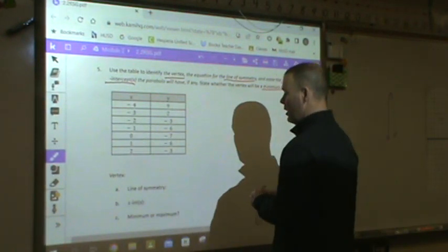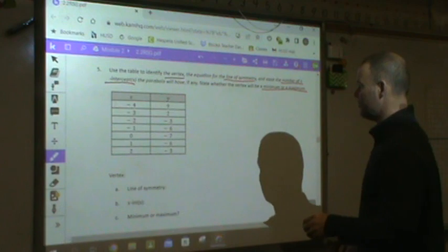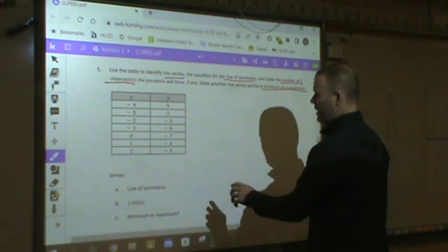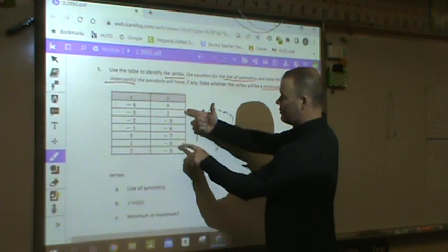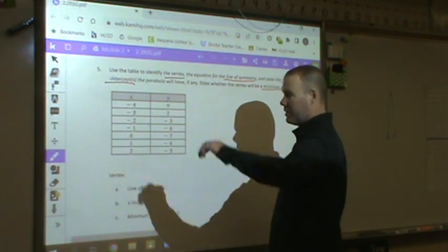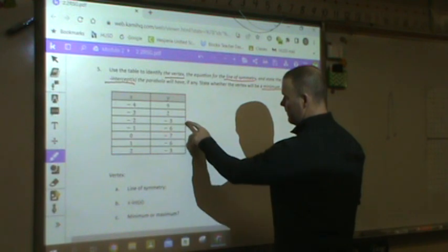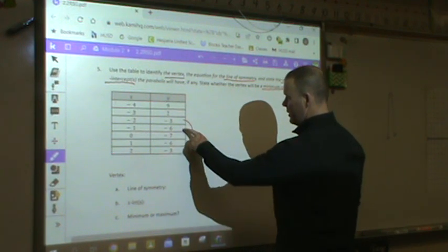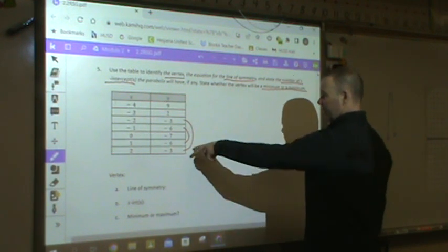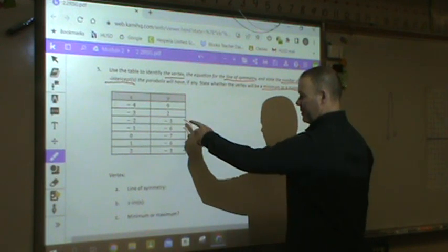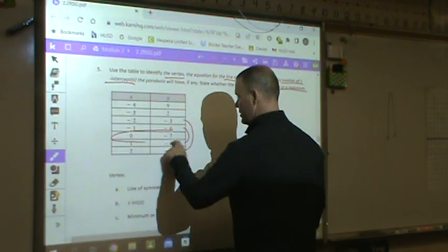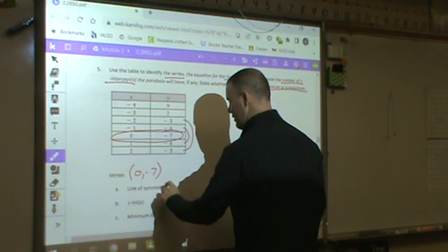All right, so here we go. A little bit of trick of the trade as far as identifying the vertex. I want to meet where the y values meet in the middle because, remember, parabola is increase or decrease. 9 to nothing, 2 to nothing, negative 3 to negative 3, negative 6 to negative 6. See how I'm just identifying those by kind of connecting them? And then my vertex is here in the middle, so my vertex is 0 and negative 7.